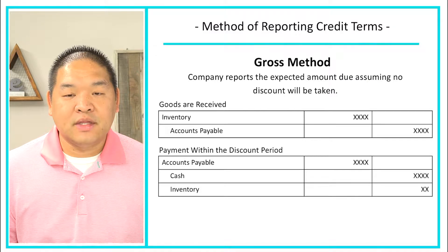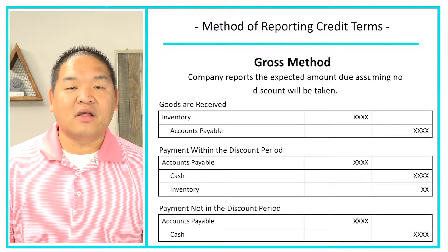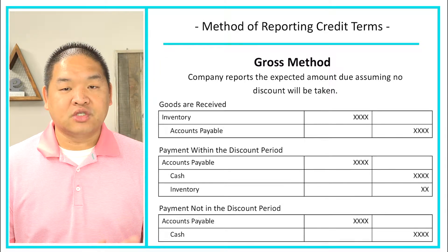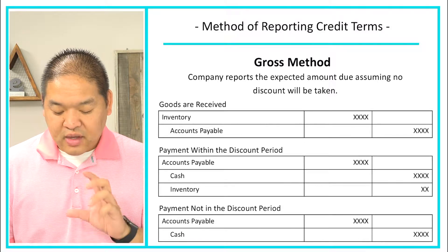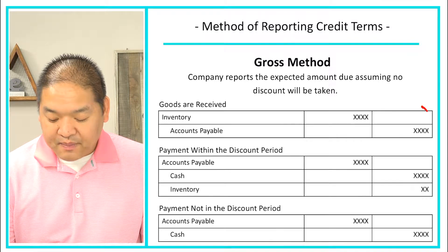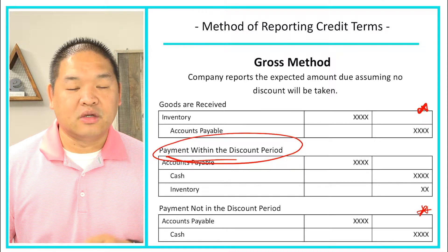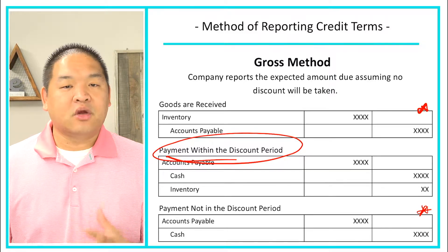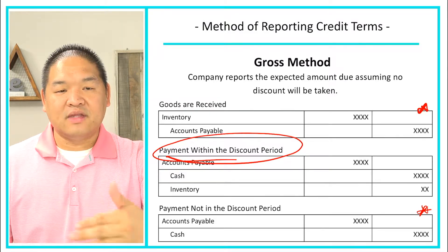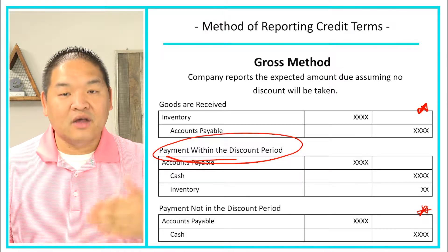If they don't pay within the discount period, it's simple: debit accounts payable for $1,000 and credit cash for $1,000. So for the gross method, paying without the discount is the most common scenario, and paying within the discount period is rarer. The gross method is also a little easier to understand because it gives you everything that's happening without considering discounts until they're actually taken.